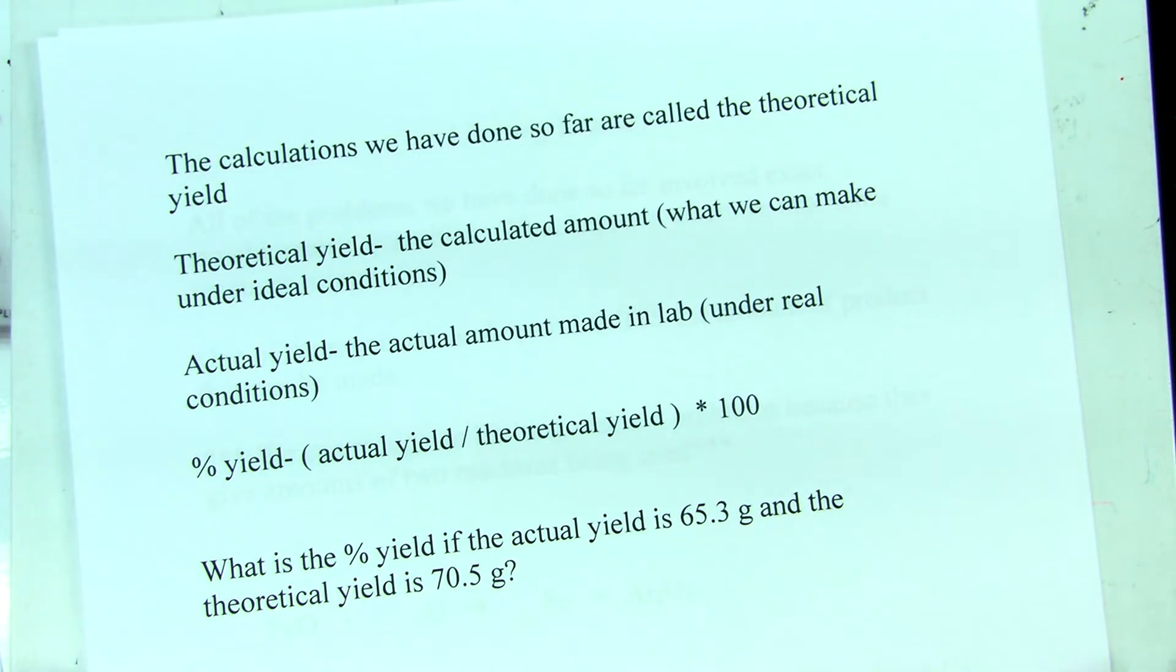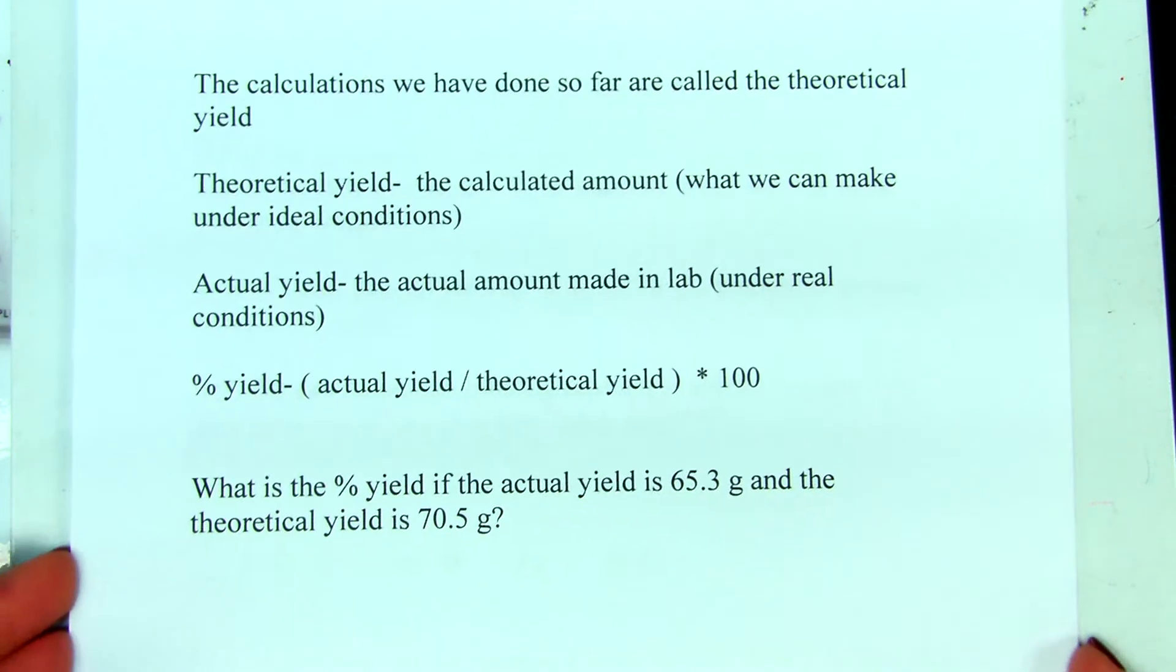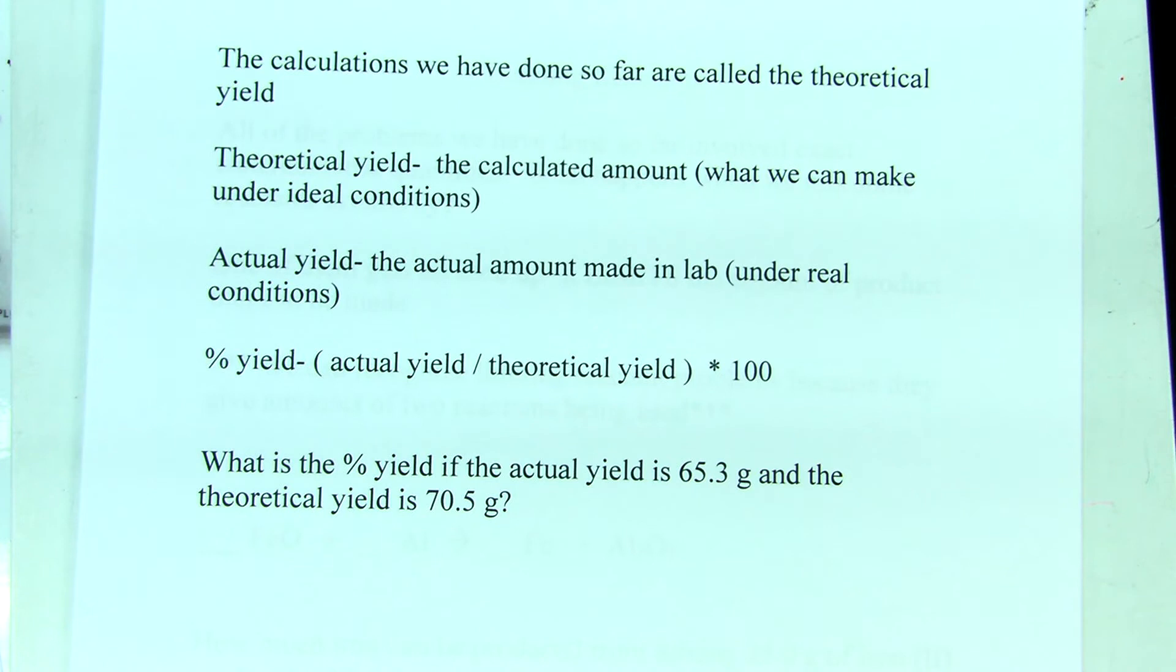Up until now we've been calculating how much of this can I make if I use up that, and that is called the theoretical calculations. It's theoretical because we assume that's what we'll make if we use everything and none of it gets spilled on the floor and none of it splashes out of the beaker. We call that the theoretical yield.